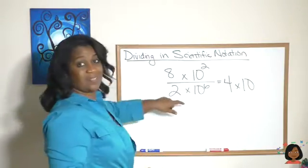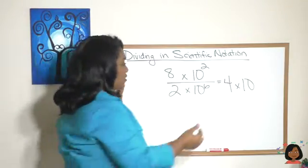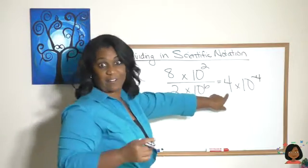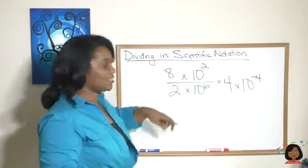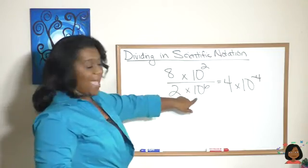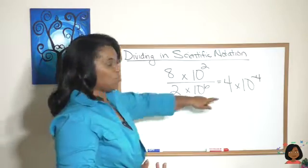Which means this is a very small number. That makes sense. We've got a small number divided by a big number, which means we're going to get a really small number.